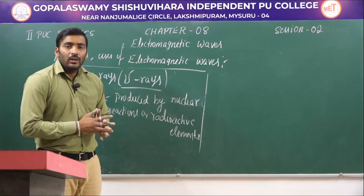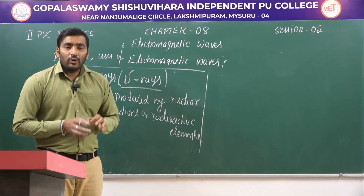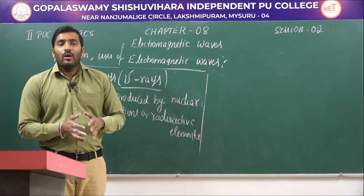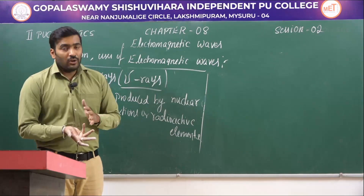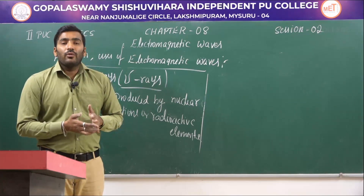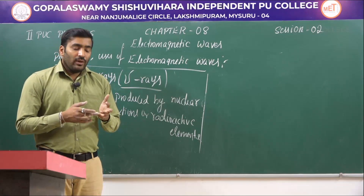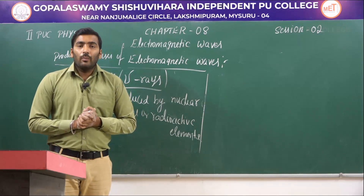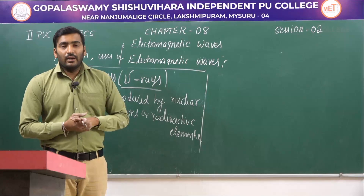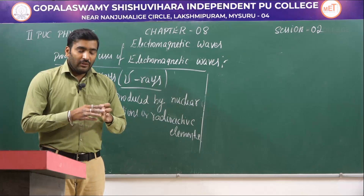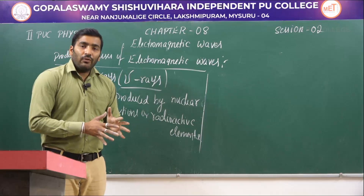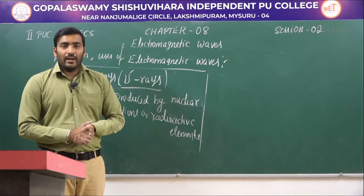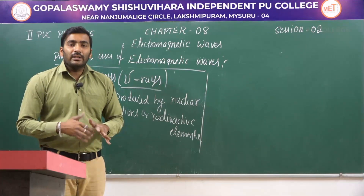In this class, we learned about the electromagnetic spectrum with its seven different radiations classified by wavelength and frequency ranges and method of production. We covered the production and uses of radio waves, microwaves, infrared rays, visible light, ultraviolet rays, X-rays, and gamma rays. From an examination standpoint, microwaves, infrared rays, UV rays, and X-rays are the most important — this chapter carries three marks and a two-mark question may come from the uses of electromagnetic waves.